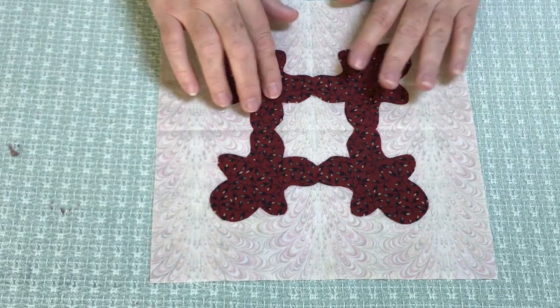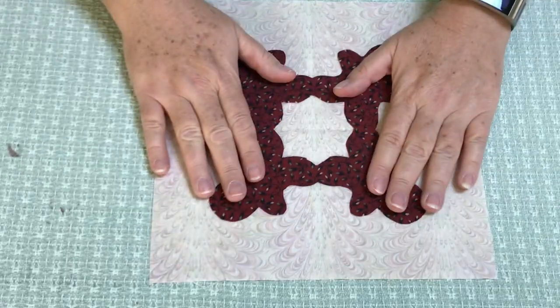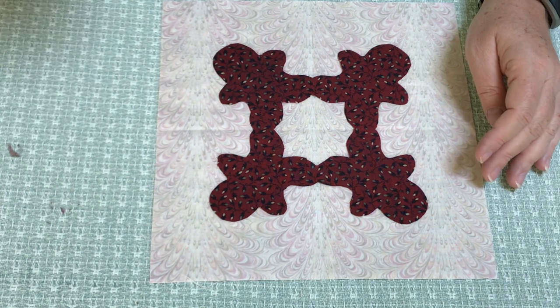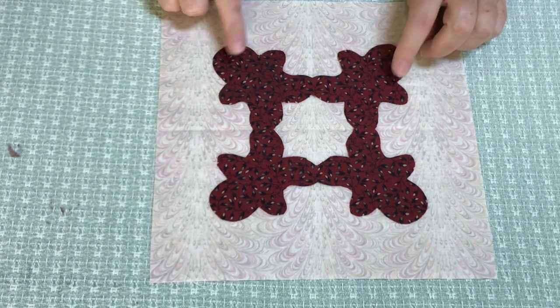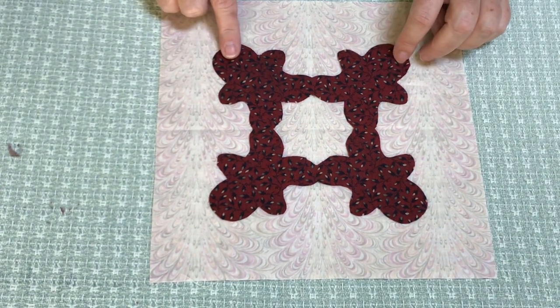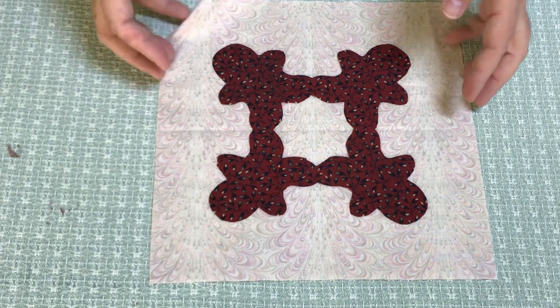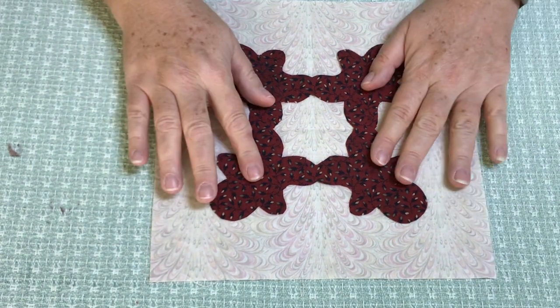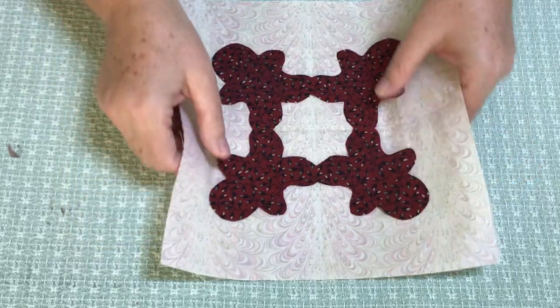Now I don't pin it or anything. I just carefully take it over to my ironing board and press it. And again, follow the manufacturer's directions for the kind of fusible web that you're using. So here we go, I'm going to take it over and I'll be right back.